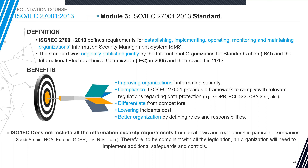CSA Star stands for Cloud Security Alliance. It is an organization that provides certificates for cloud infrastructures. They offer CSA Star 1, Star 2, and Star 3 — certificates which confirm that your cloud service provider's infrastructure is secure.